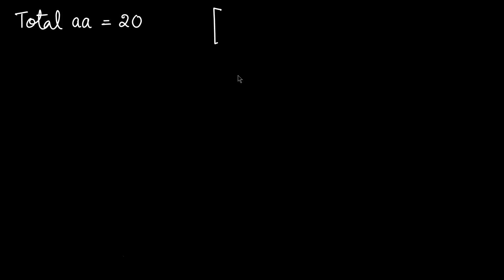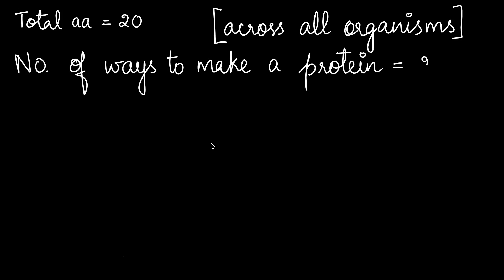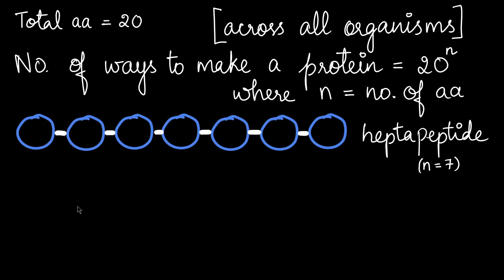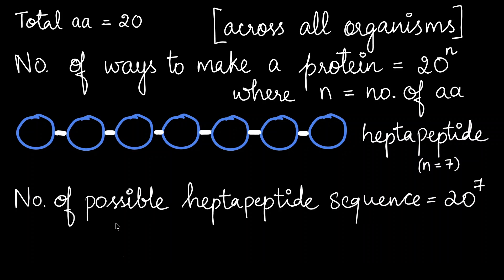The number of ways to make a protein is designated as 20 to the power n, where n is the number of amino acids. If you look at the structure from before, it had 7 amino acids, so here n equals 7—it's a hepta peptide. So the number of possible combinations of a hepta peptide sequence is 20 to the power 7, which is 1,280,000,000.